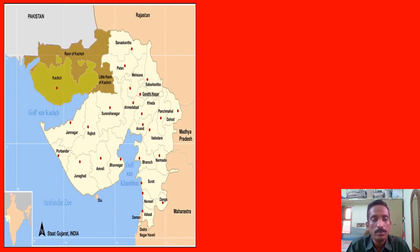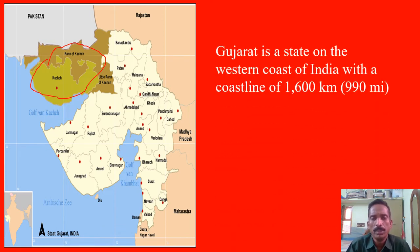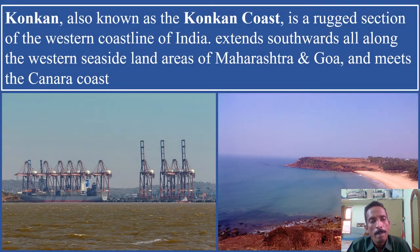Starting from the Rann of Kutch in Gujarat, the western coastal plain begins. Gujarat is a state on the western coast of India with a coastline of 1,600 kilometers. It is the state with the highest coastal plain and is first in India in terms of coastal length.